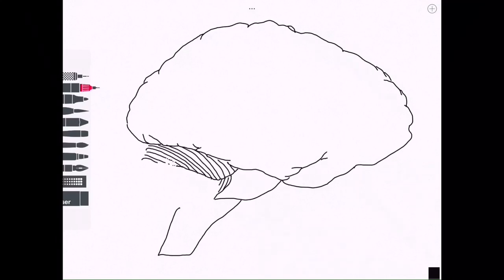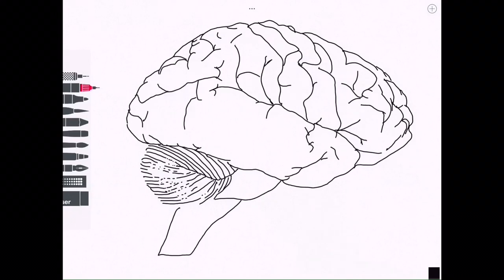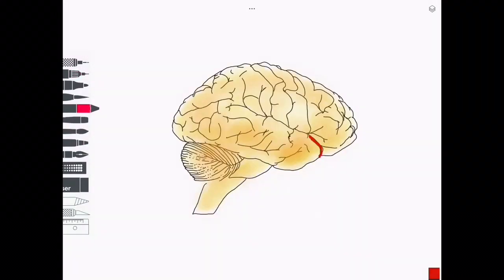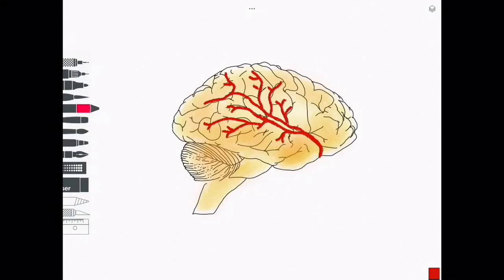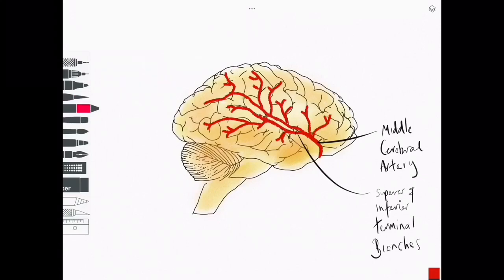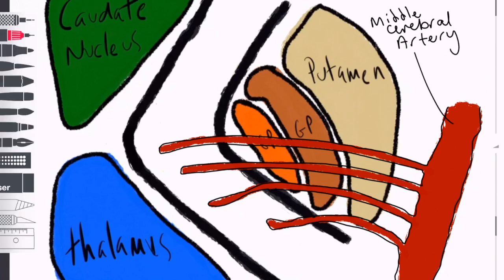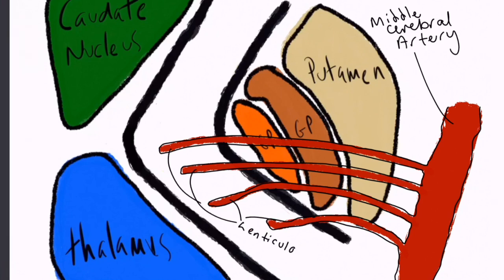If we then look at a lateral view, we can follow the two major superficial branches of the MCA further after they have emerged from the sylvian fissure. The superior superficial branch leaves the sylvian fissure and travels superiorly along the convexity of the brain surface. Unsurprisingly, the inferior branch leaves the sylvian fissure and travels inferiorly. The lenticulostriate branches supply important deep structures, including much of the basal ganglia and part of the internal capsule.